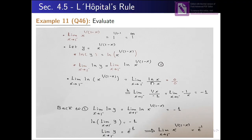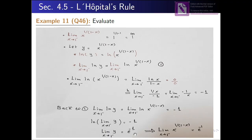بما أنها 0/0 indeterminate form، إذن نستخدم L'Hôpital's rule. استخدمنا L'Hôpital's rule: derivative of ln(x) = 1/x، وderivative of (1−x) = −1. بعد التبسيط، limit لما x تقترب من 1 يطلع عندنا −1. من المعادلة رقم 1 الطرف الأيمن = −1، فنساوي limit of ln(y) = −1، ثم نكتبها ln(limit of y) = −1. نضيف e للطرفين فيصير limit of y = e^(−1)، والـ y كانت x^(1/(1−x))، إذن الليمت = e^(−1).